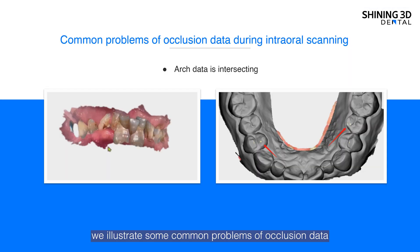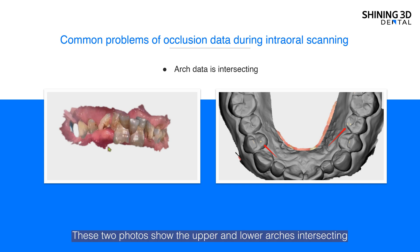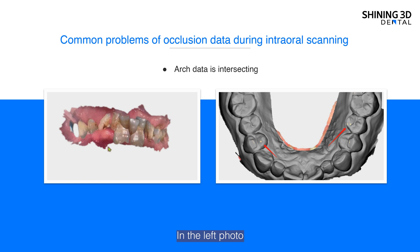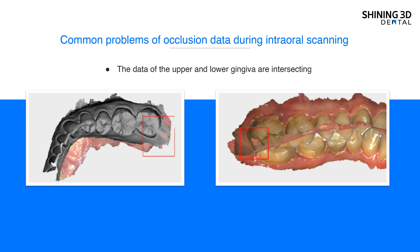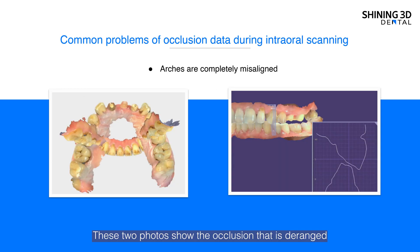In this slide, we illustrate some common problems of occlusion data during intraoral scanning. These two photos show the upper and lower arches intersecting. In the left photo, it's very obvious. In the right photo, the red arrows indicate the intersecting data. These two photos show the gingiva that is intersecting, shown in the red frame. These two photos show the occlusion that is below range on the left one, or elevated on the right one.